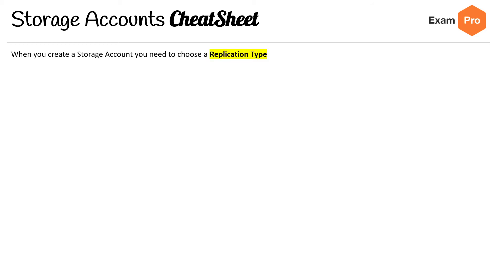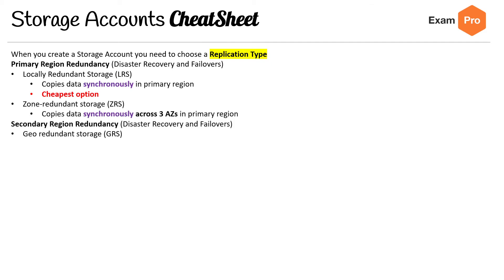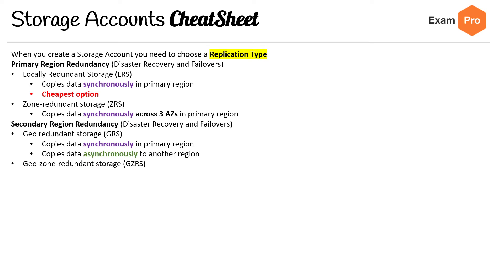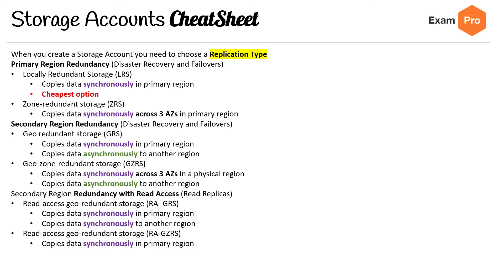When you create a storage account, you need to choose a replication type. For primary region redundancy, there are several types broken into categories: Locally Redundant Storage (LRS), Zone Redundant Storage (ZRS), Geo-Redundant Storage (GRS), and Geo-Zone-Redundant Storage (GZRS). There are also read-access variants: RA-GRS and RA-GZRS. There are a bunch of different variations here, so carefully review all of them and make sure you know the difference.